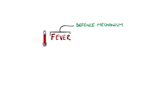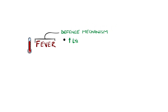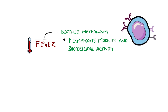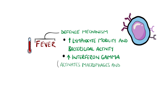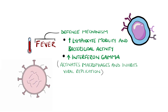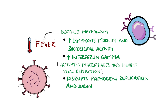The fever helps fight infection because there is an increase in the mobility and bactericidal power of lymphocytes, as well as increasing interferon gamma, which is an activator of macrophages and has a direct effect on inhibiting viral replication. On top of this, the higher temperature can impair the ability of the pathogen to replicate and to survive.